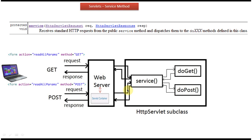Then the service method sends the response back to the Servlet container. The Servlet container sends the response back to the web server, and the web server sends the response back to the client. So the work of the service method is to dispatch or delegate the request to the corresponding doXX method.